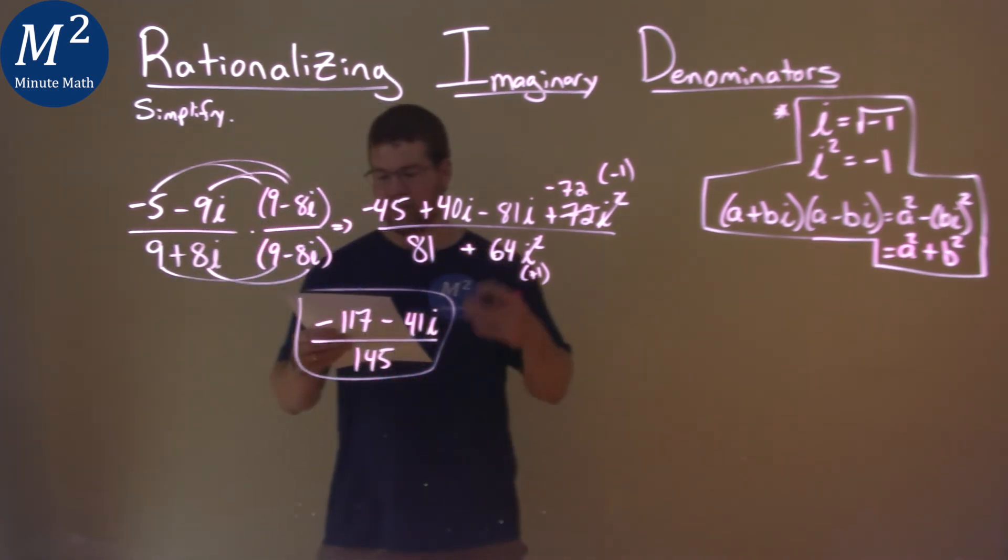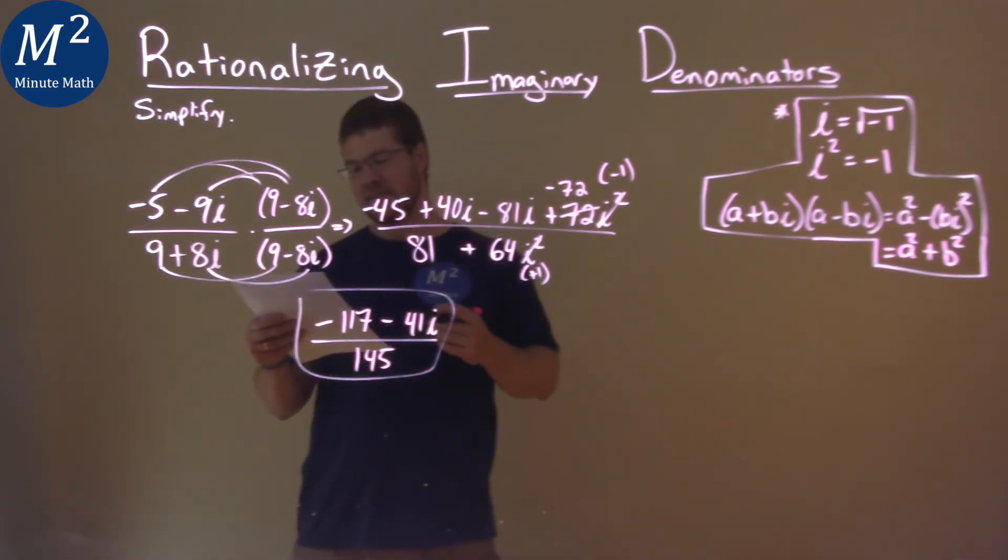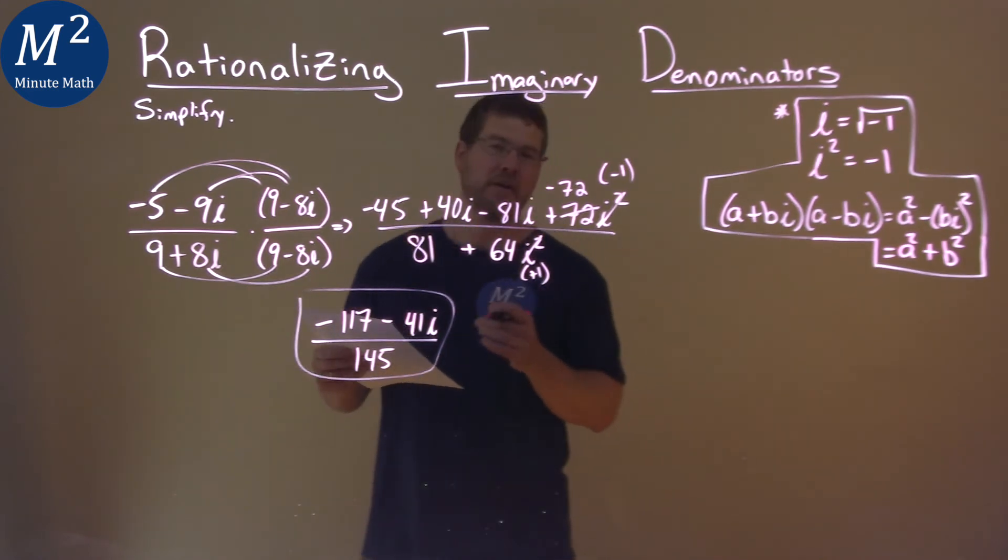This doesn't actually break down anymore, and our final answer is negative 117 minus 41i over 145.